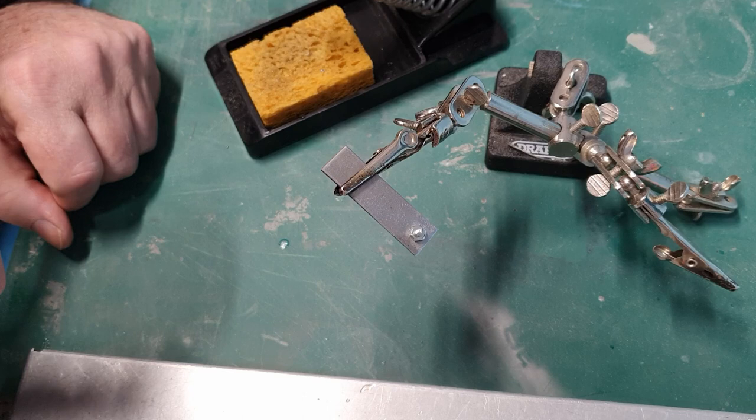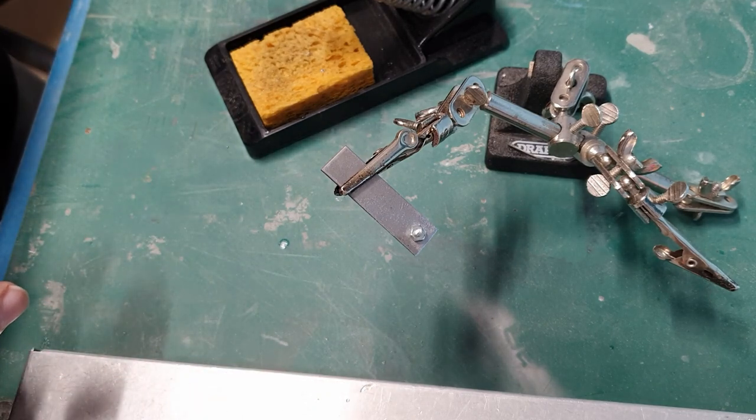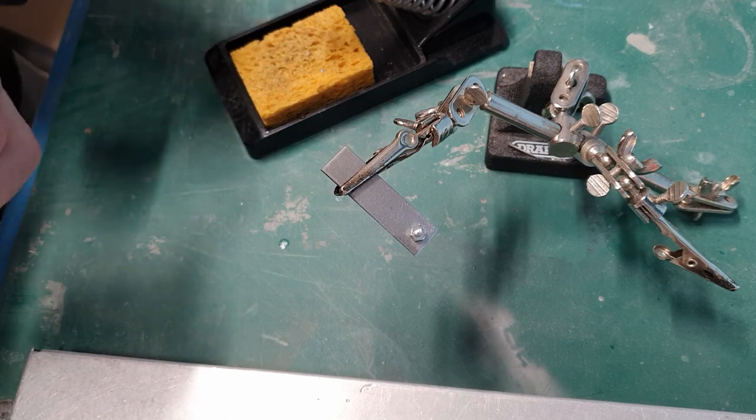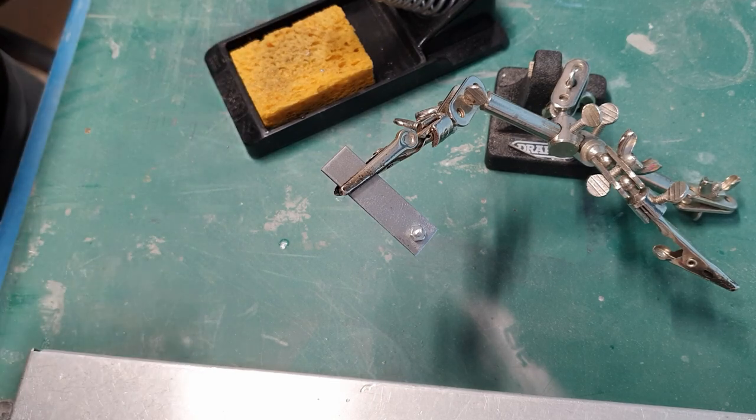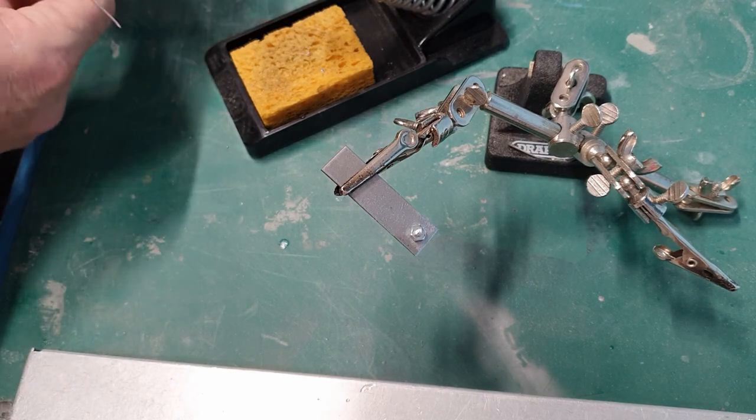But when you use it, you end up with a really glossy silver flow over the top of your wiring and stuff. Because I mainly fly electrics, the resistance of my connectors and contacts has to be good, so high silver content in the solder is the answer.